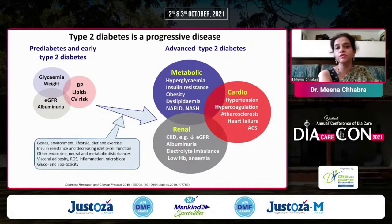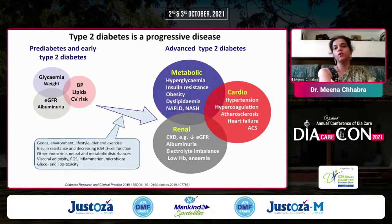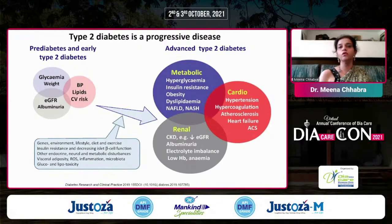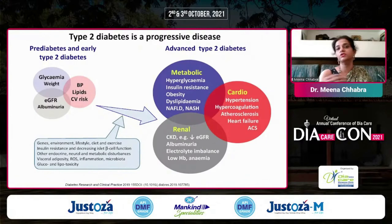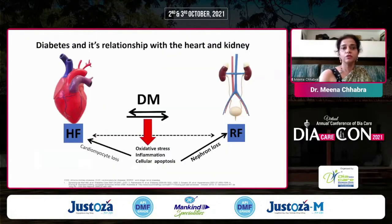Drugs can address most of these risk factors. Better control of hypertension can reduce vascular complications. Better control of LDL — and now we have drugs to control Lp(a), another risk factor — provides enough evidence to decrease cardiovascular mortality. We also have ACE inhibitors, ARBs, and the wonderful SGLT2 inhibitors, which decrease not just the progression of microproteinuria to macroproteinuria, but also hard endpoints like end-stage renal disease, need for dialysis, and renal transplant. Diabetes produces oxidative stress, inflammation, and cellular apoptosis, which may lead to cardiomyocyte and nephron loss — a continuum of microvascular and macrovascular complications.